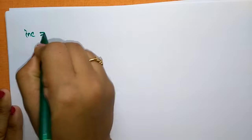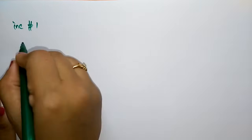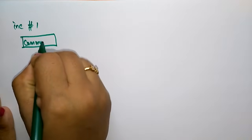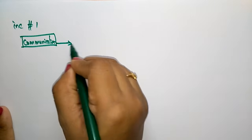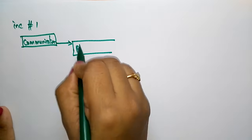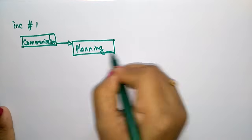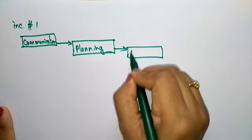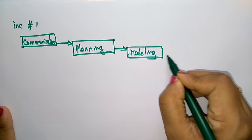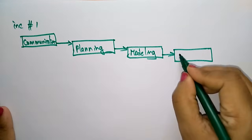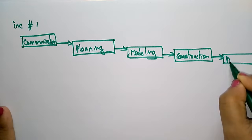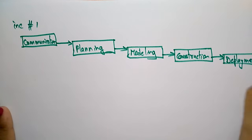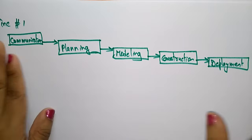Let me show you the diagram. In increment one — the first module — the team starts with communication with the customer, then planning, then modeling, then construction of the product, and finally deployment. Once one module is completed, the product is delivered. This is one independent process.